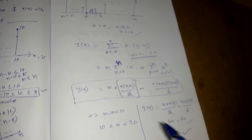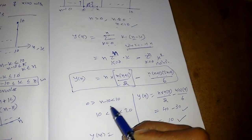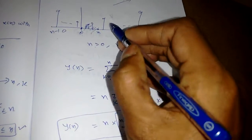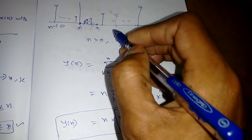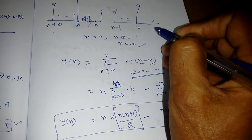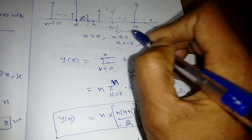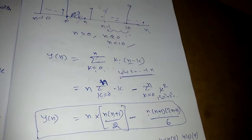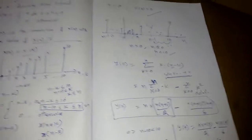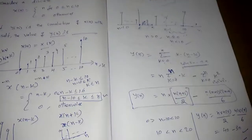If they ask for y[11] or y[12], we proceed further — the signal shifts so the common region becomes n-10 to 10, and we apply the formulas again for that range. This is how convolution of any discrete time signal is performed.